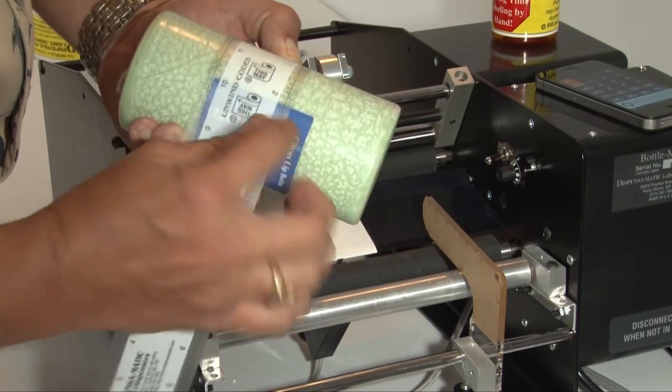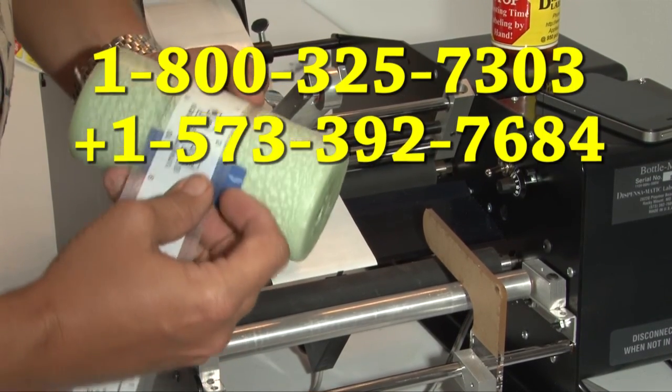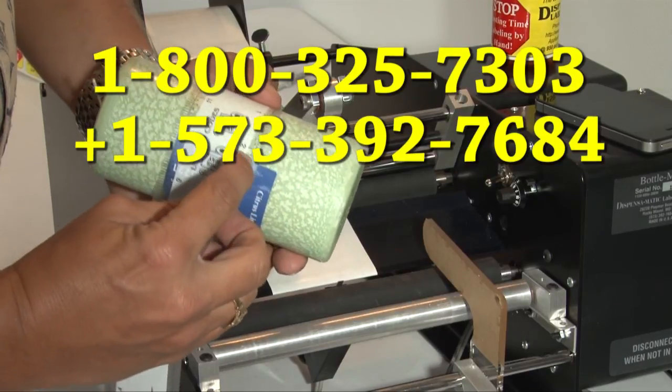That's it. It's very simple to set up for 2 labels. Please don't ever hesitate to call our 1-800 number. That's 1-800-325-7303. We'll be more than glad to help you over the phone as well.